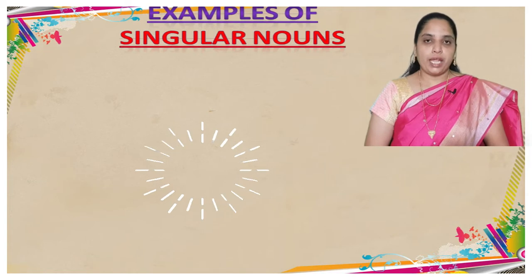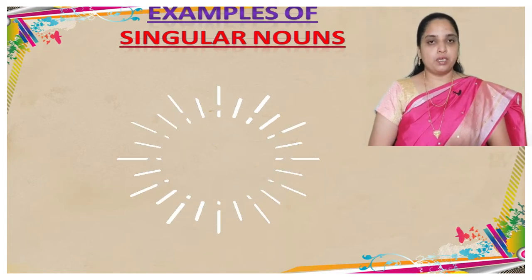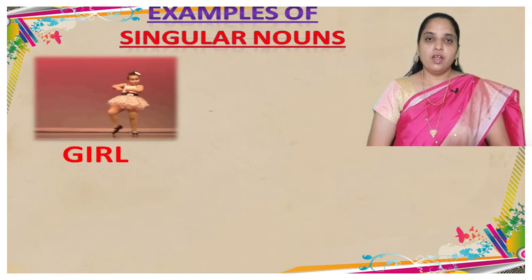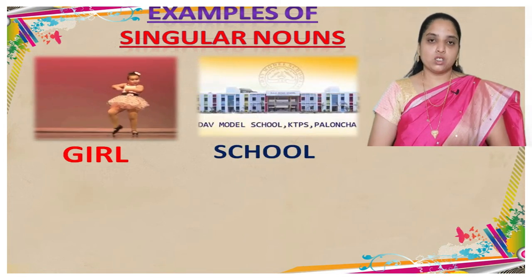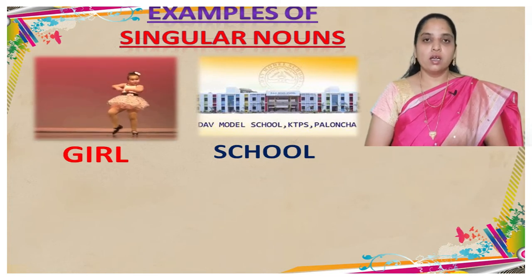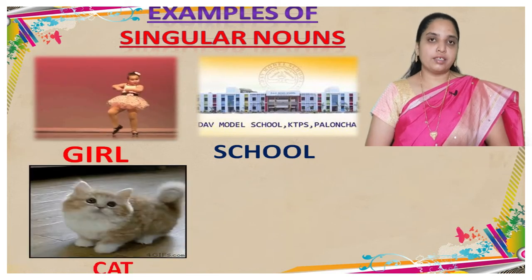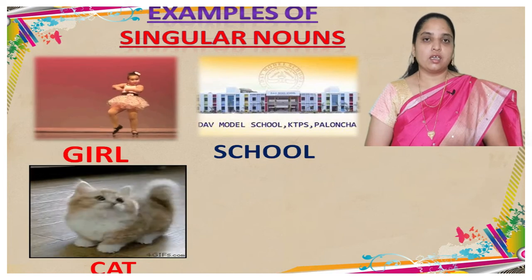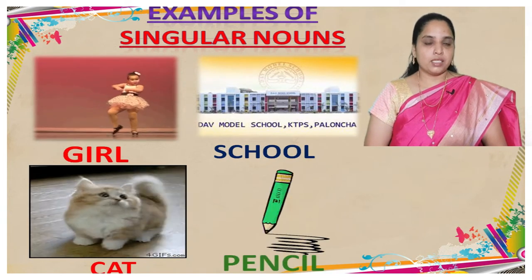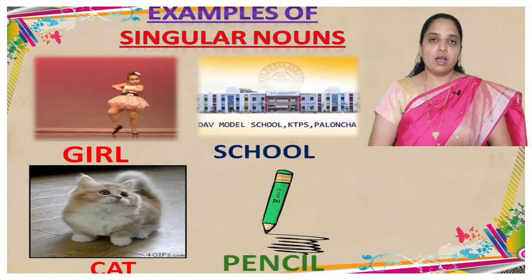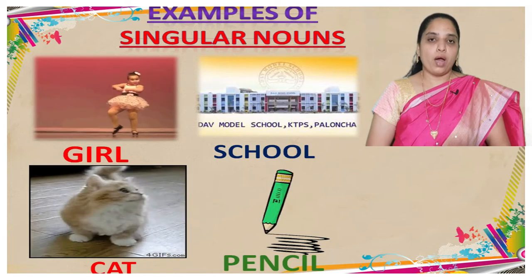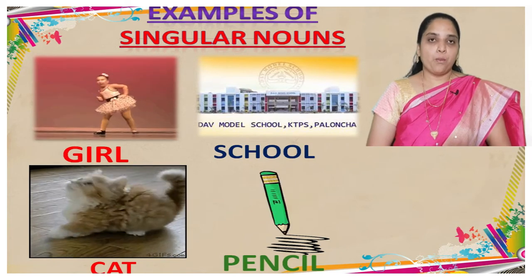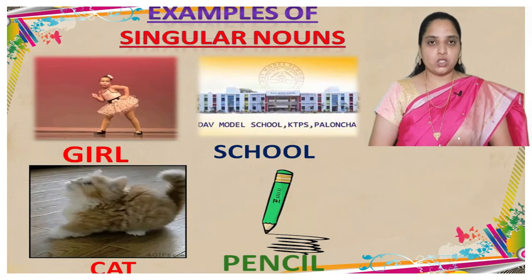We shall see some examples. For person, if it is one — in the picture you can see one girl. One school is a place. One cat is an animal. One pencil is a thing. These are examples of singular nouns. We can see one girl, one school, one cat, one pencil.